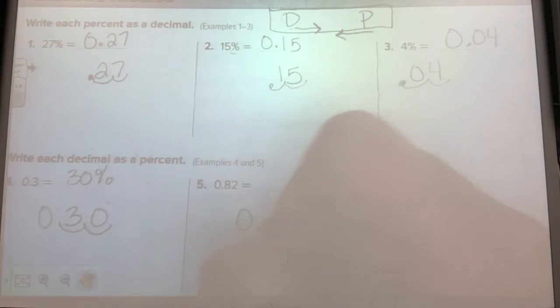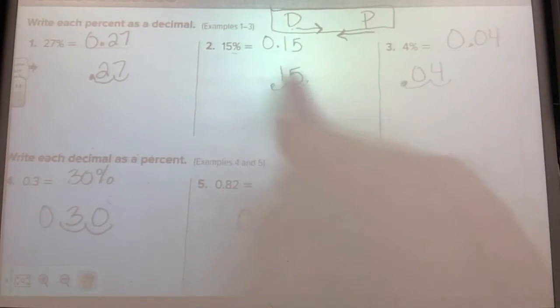Zero point eight two. I got a decimal going to a percent, two to the right. One, two. Eighty two percent.